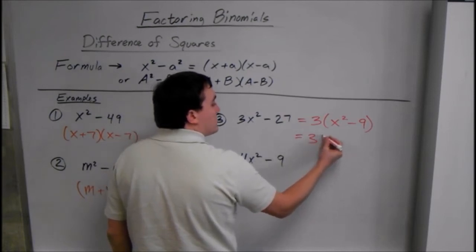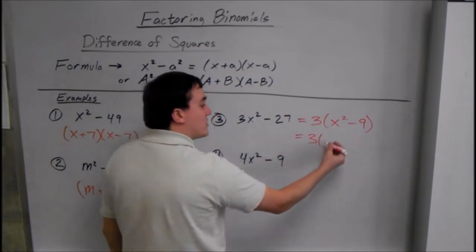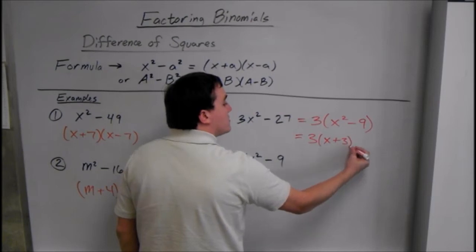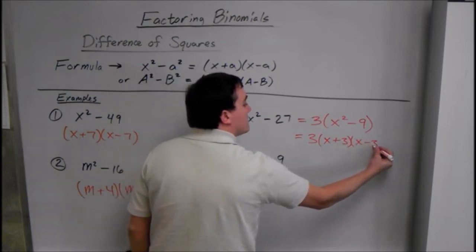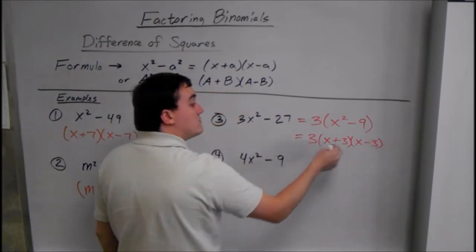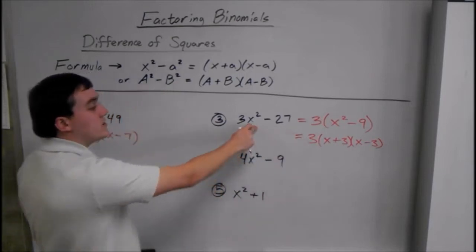So that will turn into 3 times the square root of 9 is 3. So x plus 3, x minus 3. And if you FOIL that out and then multiply it all by 3, you'll get right back to here.